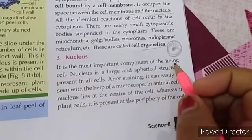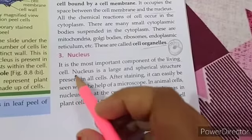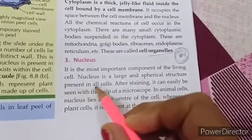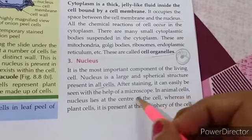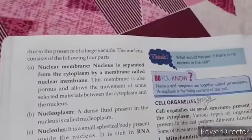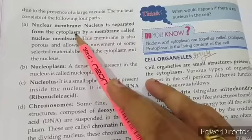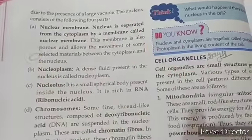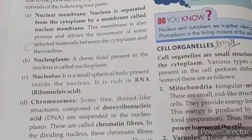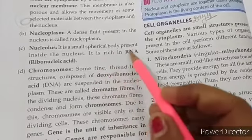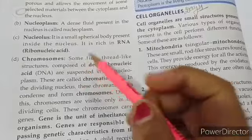The third part is the nucleus. It is the most important component of the living cell. The nucleus is a large and spherical structure present in a cell. After staining, we can easily see it under a microscope. In animal cells, the nucleus lies in the center, whereas in plant cells it lies at the periphery. Parts of nucleus include: nuclear membrane — which separates the cytoplasm from the nucleus — nucleoplasm, which is the fluid inside, and the nucleolus, which is a small spherical body present inside the nucleus.